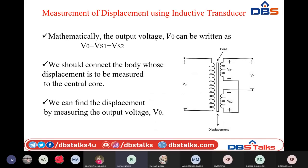We can also find displacement with inductive transducers. Inductive transducers contain only inductances. The construction has two windings — one primary winding on the left side and two secondary windings on the right side. These secondary windings are connected in series opposition — the negative terminal of one is connected to the positive terminal of the other — which produces a differential voltage output.